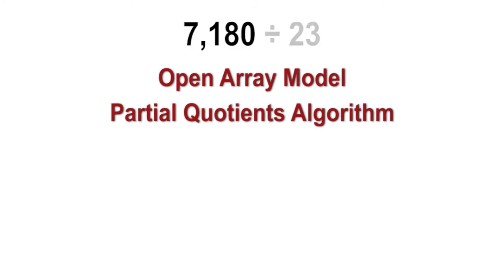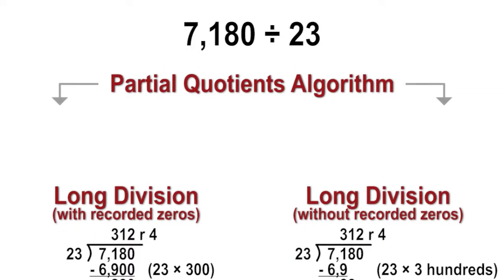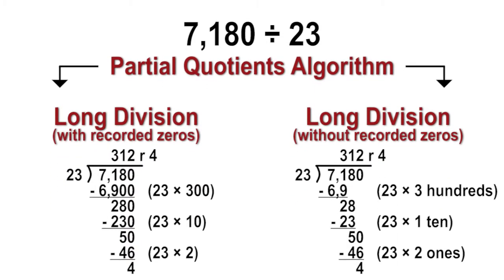Students entering sixth grade should be familiar with using many strategies for dividing up to four-digit dividends by up to two-digit divisors. Open array models and the partial quotients algorithm were two such strategies. Students progressed from the partial quotients algorithm to the long division algorithm, with the exception of the zeros being recorded in the partial products subtracted from the dividend. Traditionally, students worked with only one place value of the dividend at a time, but the benefits are many using recorded zeros when working with long division.